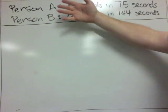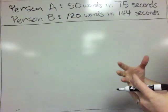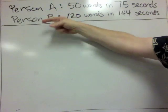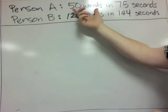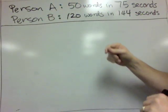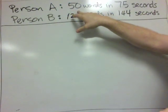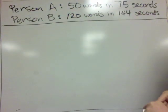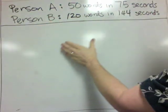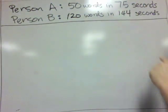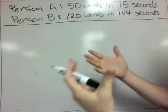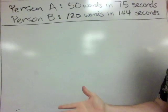Alright, in this video I'm going to show you three different ways to compare ratios. We've got person A and person B for this problem, and they're both typists. Person A can type 50 words in 75 seconds, while person B can type 120 words in 144 seconds. For the sake of this video, let's say we want to figure out who's faster.